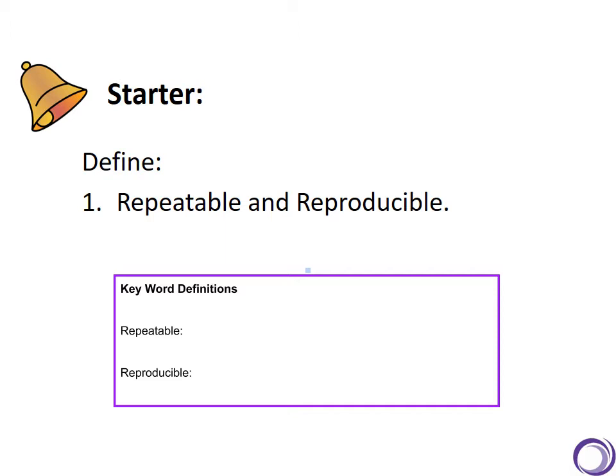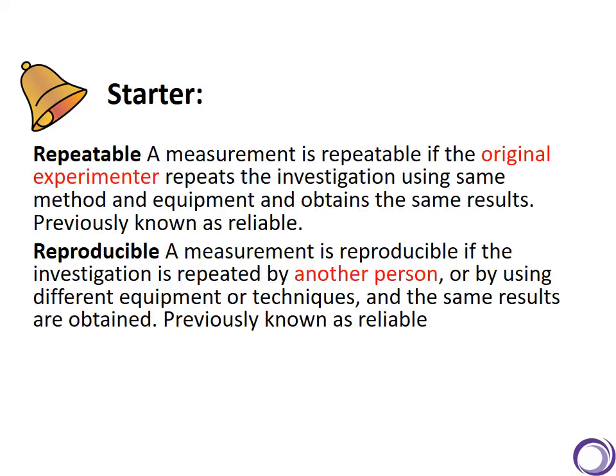If you turn to your Google Doc, you'll be able to fill in the definitions for these words at the top. So repeatable is a measurement where the original experimenter can repeat the investigation and get the same results.